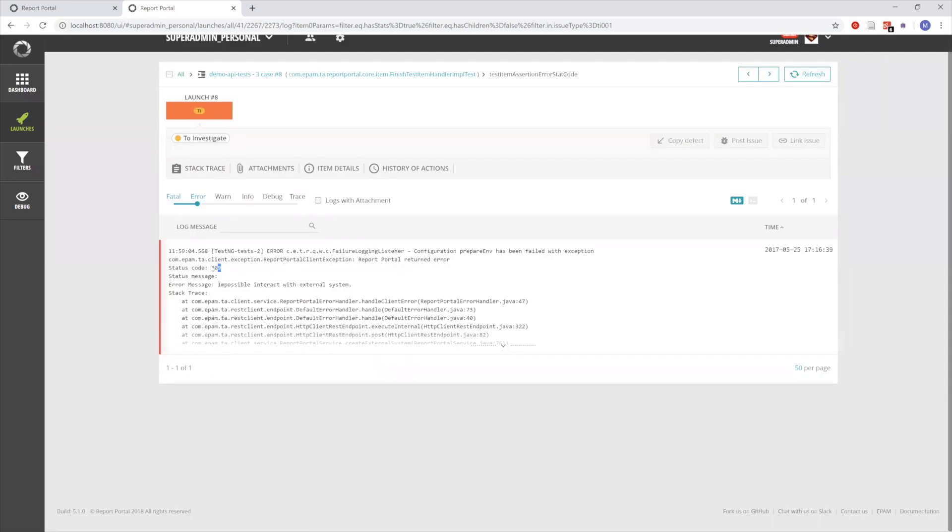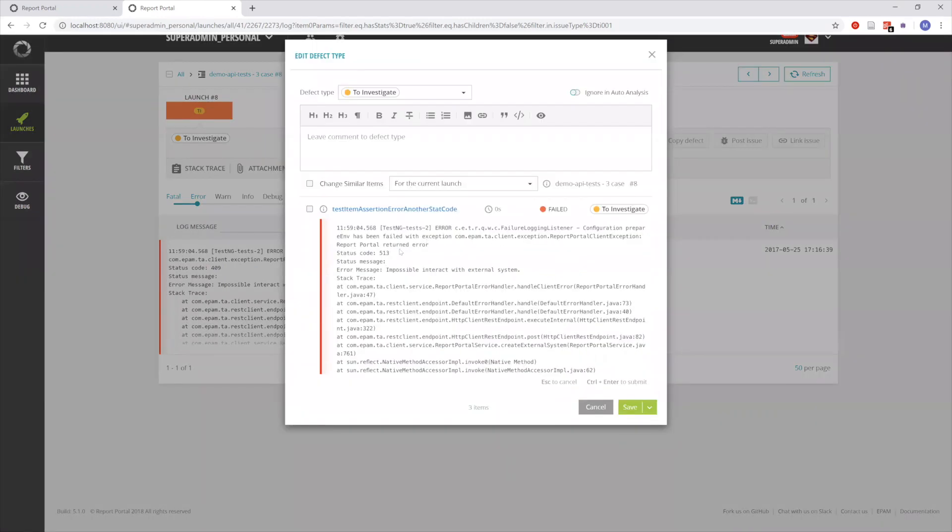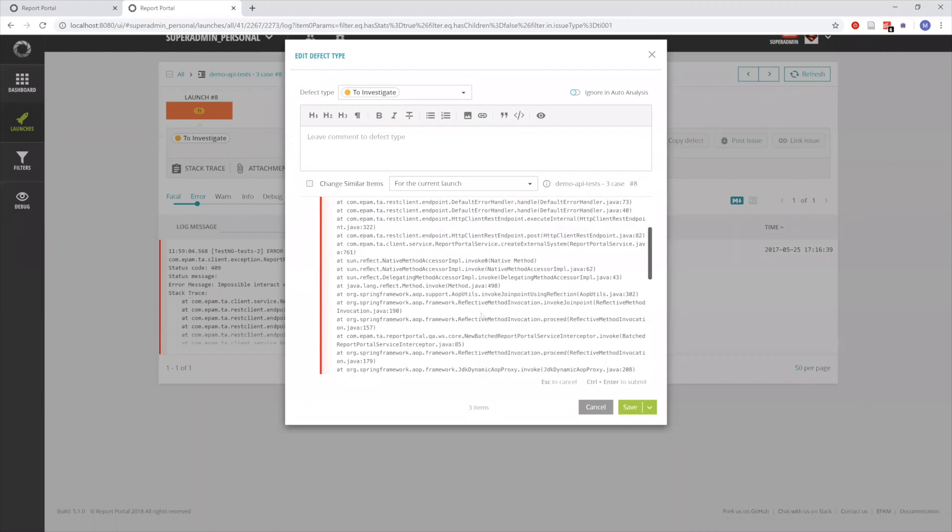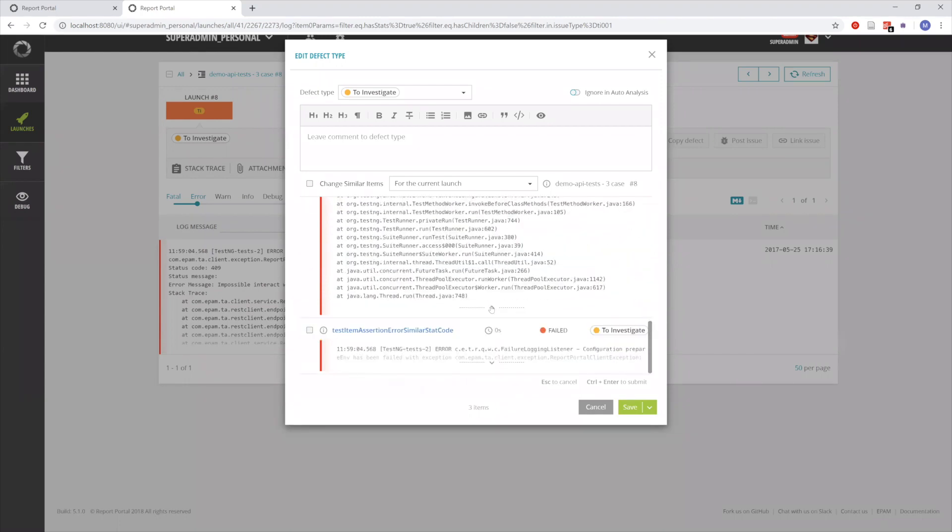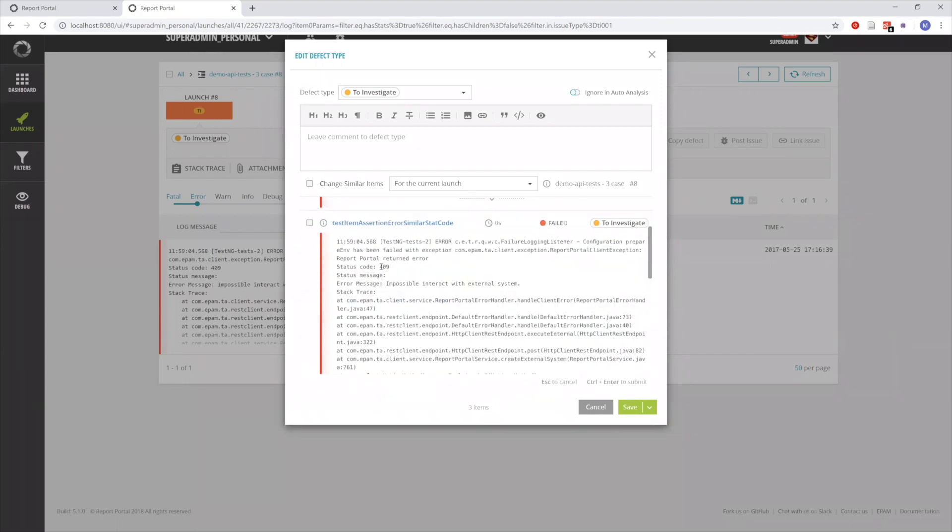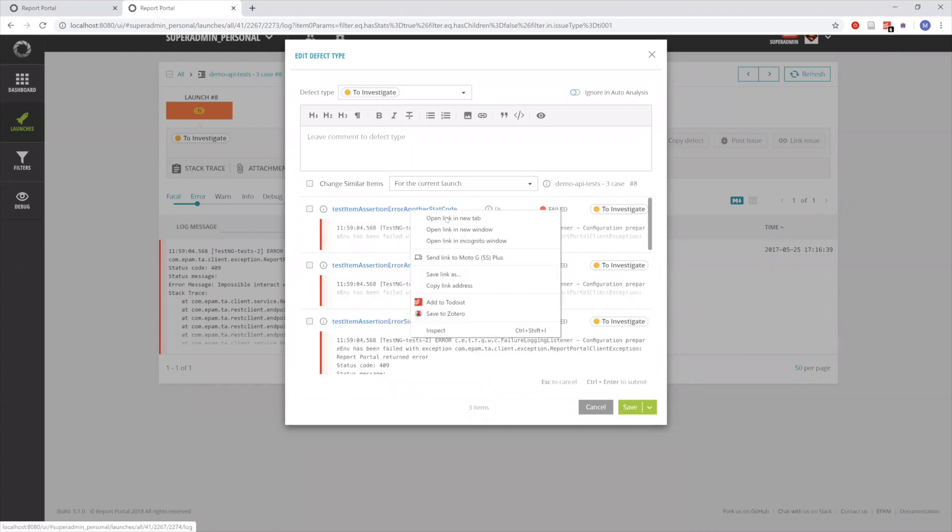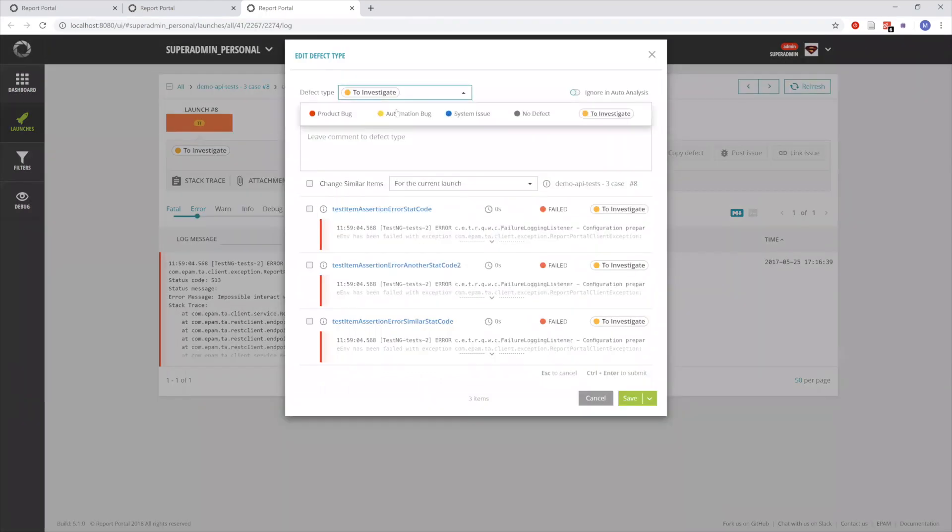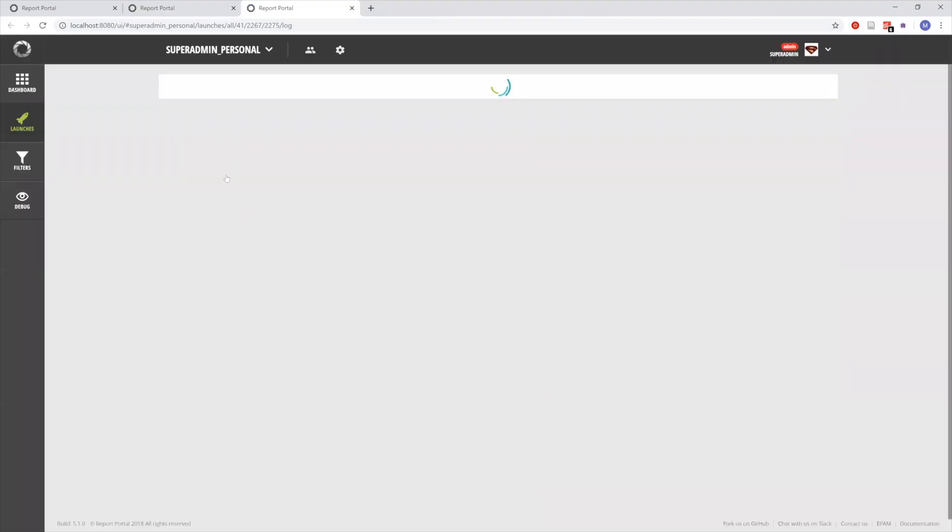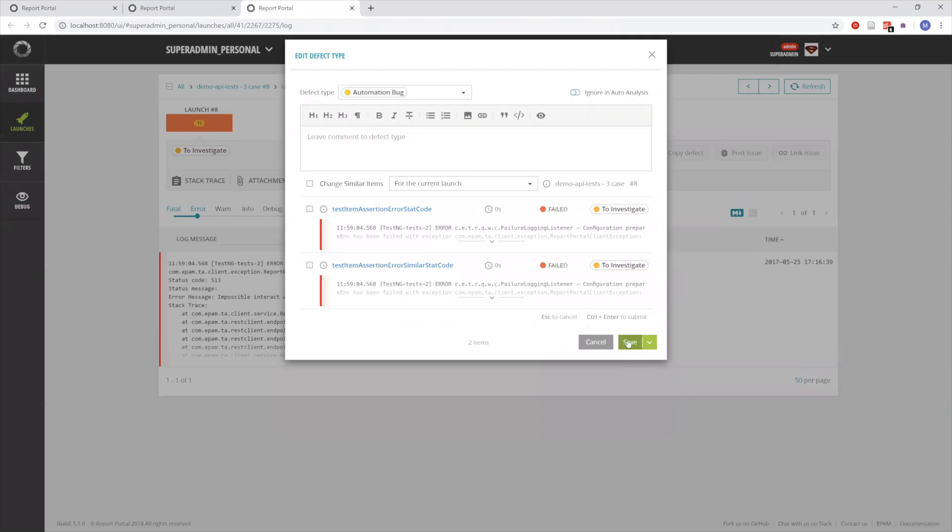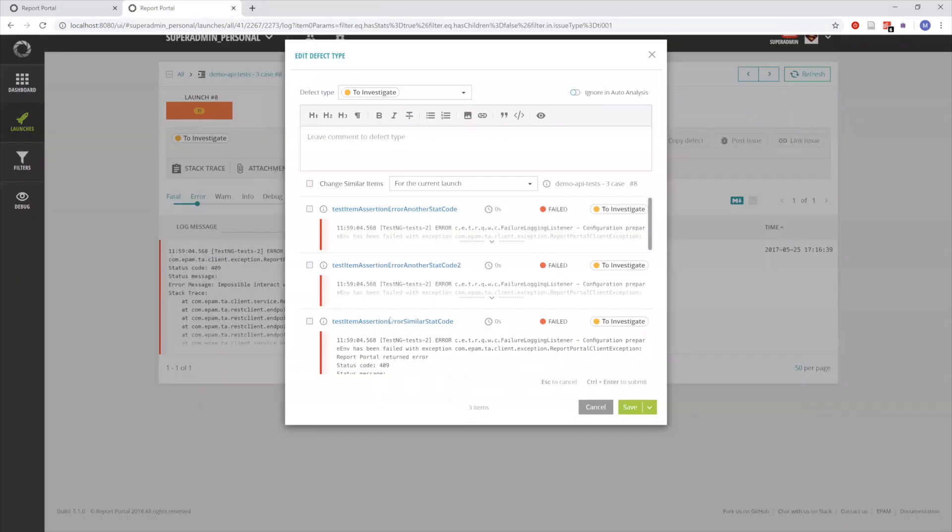In this test item, we see status code 409, and we have similar test items with 90% match, but two of them have 513 status code, and one of them has the same status code 409. They have similar relevance scores, but we would like to have a more relevant result with this status code. For ones that have another status code, we will assign automation bug defect type, whereas for the one which has similar status code, we're going to make it a product bug.